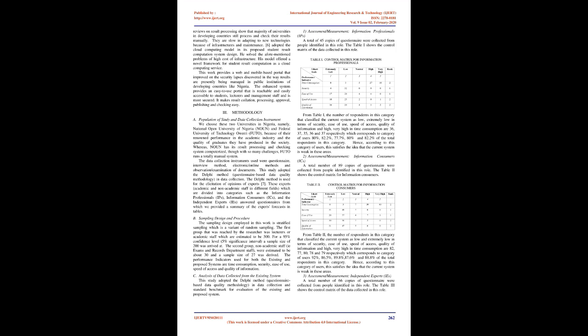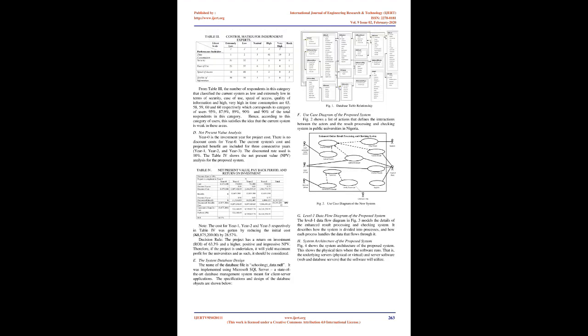The sampling design employed in this work is stratified sampling, which is a variant of random sampling. The first group reached by the researcher was lecturers or academic staff, estimated to be 500. For a 95% confidence level, 5% significance interval, a sample size of 200 was arrived at. The second group, non-academic staff (i.e., exams and records department staff), were estimated to be about 30 and a sample size of 27 was derived. The performance indicators used for both the existing and proposed systems are time consumption, security, ease of use, speed of access, and quality of information.